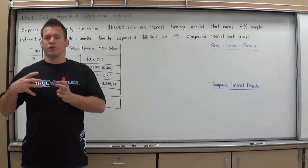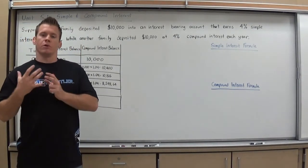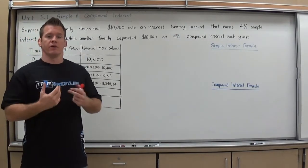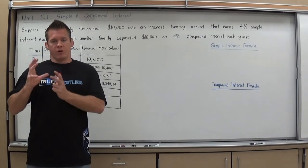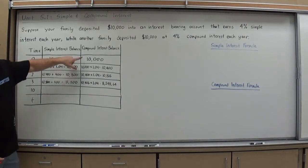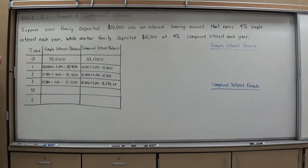First thing you know is what simple interest is. Simple interest is when you take a principal, an amount you have, let's say $10,000, and you times it by 4%, 10,000 times .04, and you get an interest for that year. So I made a table here to start. At time zero, both the simple interest balance and compound interest balance are $10,000.